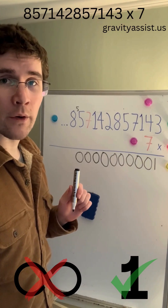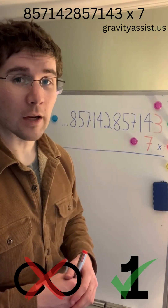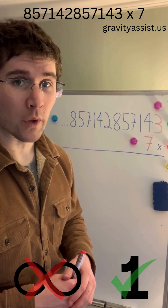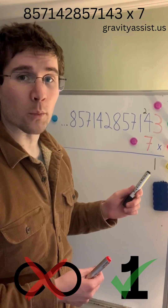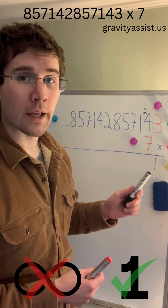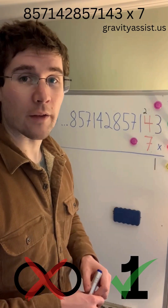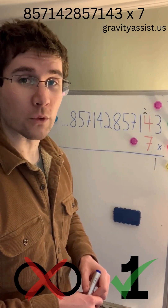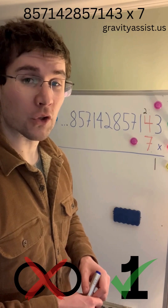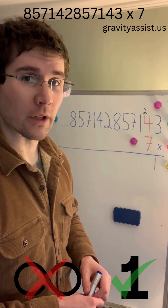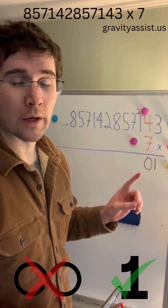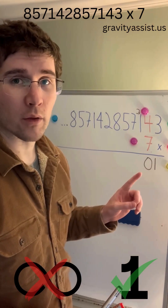So we'll put a 0 down here and carry the 5. 7 times 3 equals 21, so we'll put a 1 down here and carry the 2. 7 times 4 equals 28 plus 2 equals 30, so we'll put a 0 down here and carry the 3.